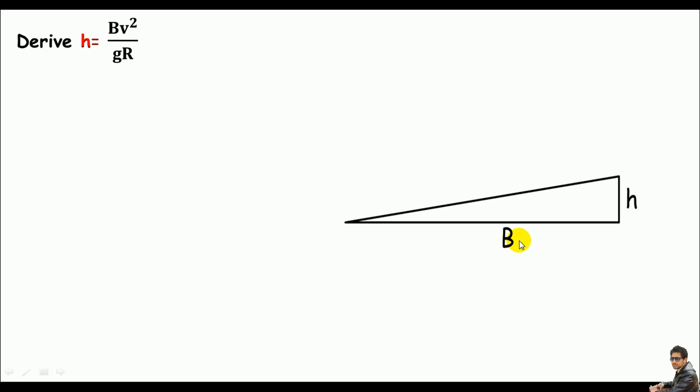The B represents the breadth of the road and h represents the super elevation, which is the difference of elevations of outer and inner edges. If you look at the triangle, we can get an angle θ₁.